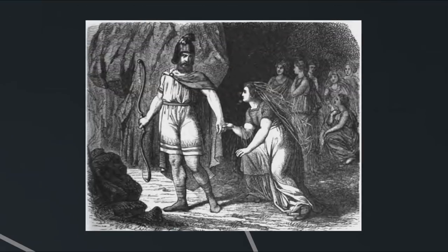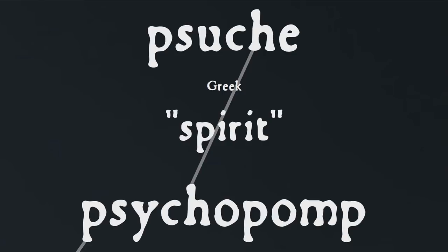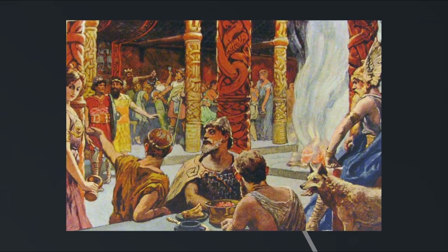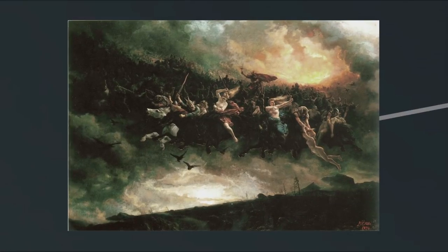That second element, Oðr, meaning mad or frantic, is the name of one of the gods in Norse mythology, the husband of Freyja, and the word also seems to be the source of the name of the god Odin. And not only does it have the meaning of madness or frenzy, but also poetry and inspiration, which as that spirit root suggests can even imply possession. What's more, Odin is a god of the dead — what's technically called a psychopomp, from the Greek word for spirit, psuche — leading the souls of the dead to the afterlife. Specifically, Odin plays host to dead warriors in Valhalla, and Odin is associated with the Wild Hunt, the ghostly procession of hunters in wild pursuit through the sky thought to presage great calamity.